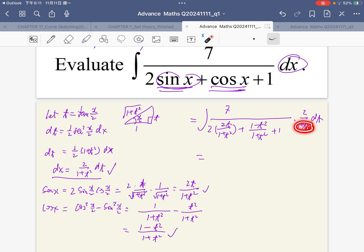Multiply 1 plus t squared into this bracket. We finally get 4t plus 1 minus t squared plus 1 plus t squared in the denominator.